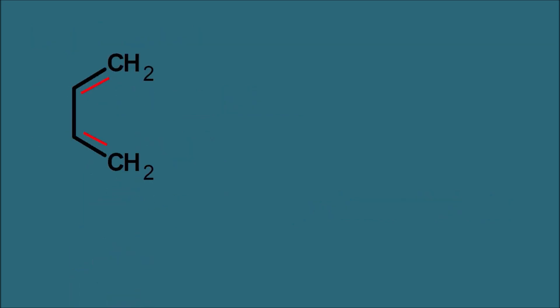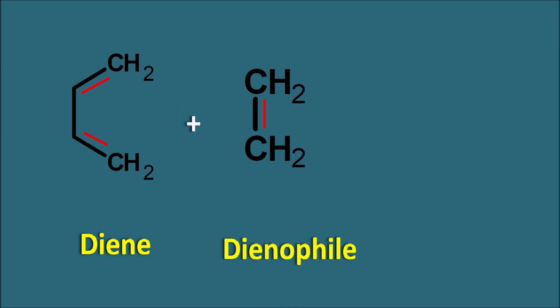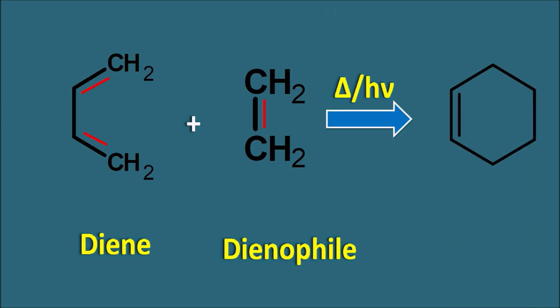This reaction requires two components: one is the diene. We take a simple 1,3-butadiene, and this diene interacts with another component — the dienophile. Taking the simple example of ethene, when they react in the presence of thermal or photo energy they produce a cyclic product. This product is nothing but simple cyclohexene. So this is a simple Diels-Alder reaction where a diene interacts with a dienophile to produce a cyclic addition product.